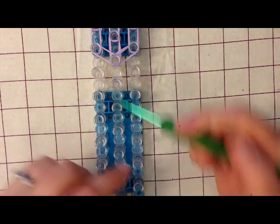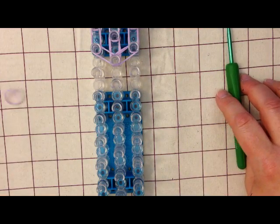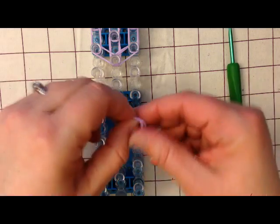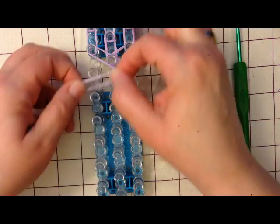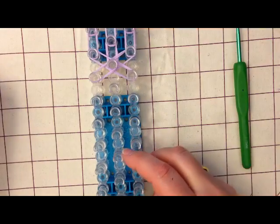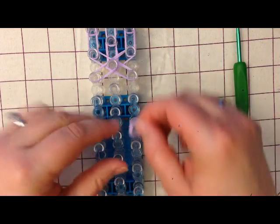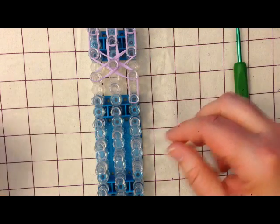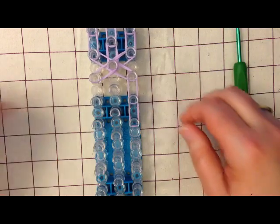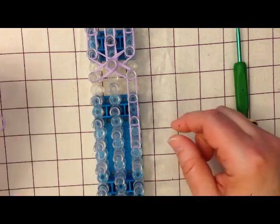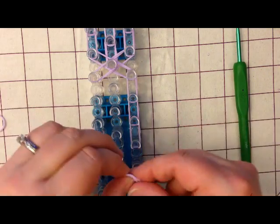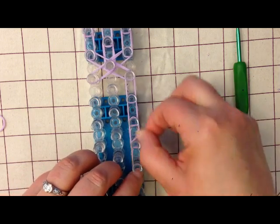Now we're going to do his body and we're going to go down five bands worth for that. We come out here to give him a little bit of definition so he doesn't look like one great purple blob because then we'd be making Barney.